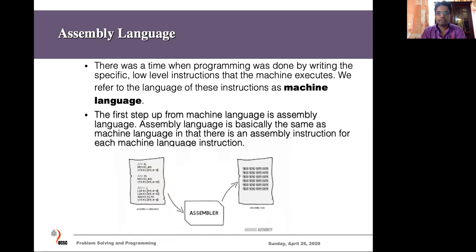The first programming language in the world is called assembly, usually called a machine language. Each computer processor consists of a set of machine language instructions — these are the basic fundamental instructions which that computer can execute or understand. If we want to solve a problem with a particular machine, we must use those instructions to instruct the computer on how to solve the problem.